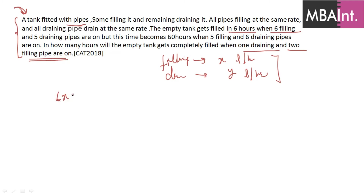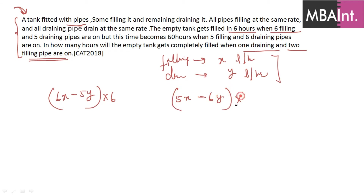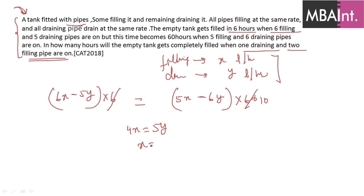Six filling pipes and five draining pipes take 6 hours to fill the tank. Five filling pipes and six draining pipes take 60 hours. Equating total capacities: (6x − 5y) × 6 = (5x − 6y) × 60. Solving this gives 4x = 5y, so x = 1.25y.